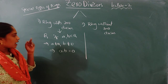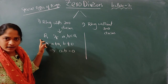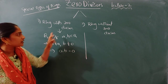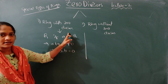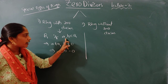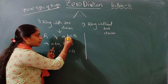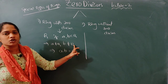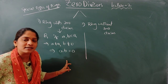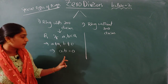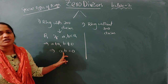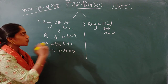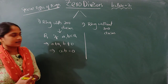Got the point? So, R is a ring, and R is said to be with zero divisors if two non-zero elements are taken from R but their product — under the binary operation of multiplication — is equal to zero. This is what we call a ring with zero divisors.